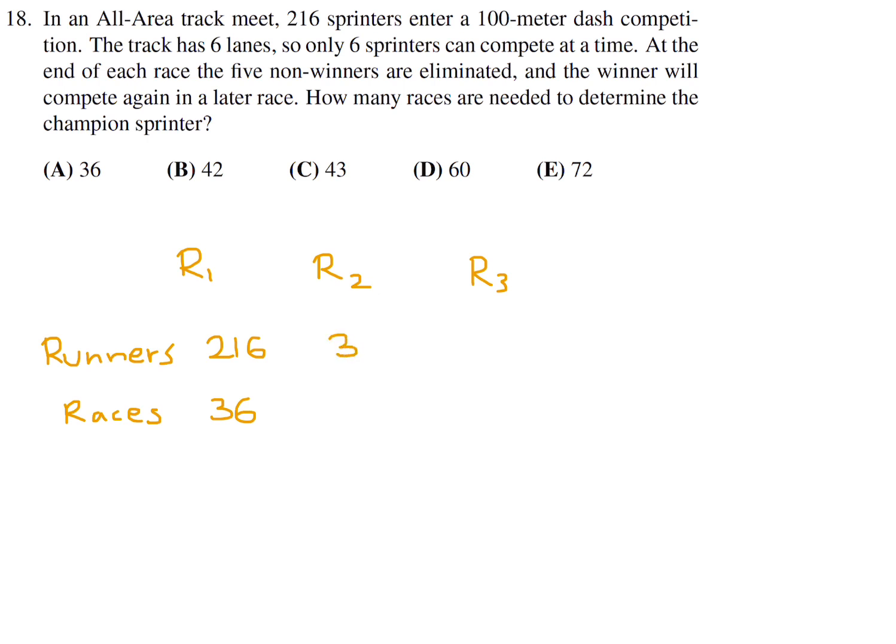In each race, only one person actually advances. In round 2, only 36 sprinters will start. 36 divided by 6 is 6 races. Only one sprinter per race advances to the third round, which is the final, and that will have one race. The total number of races is 36 plus 6 plus 1, which is 43. Number 18, the answer is C.